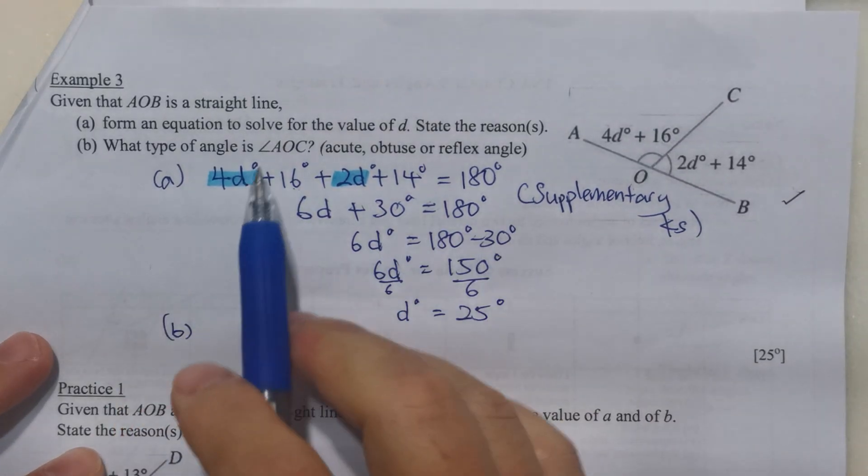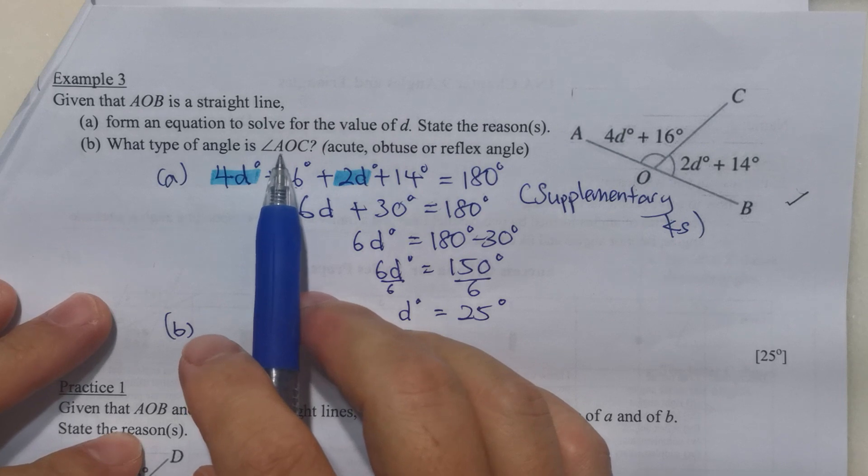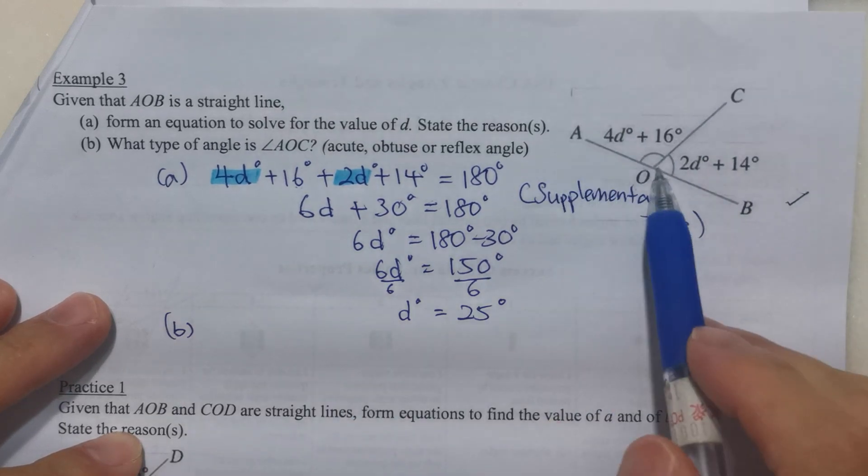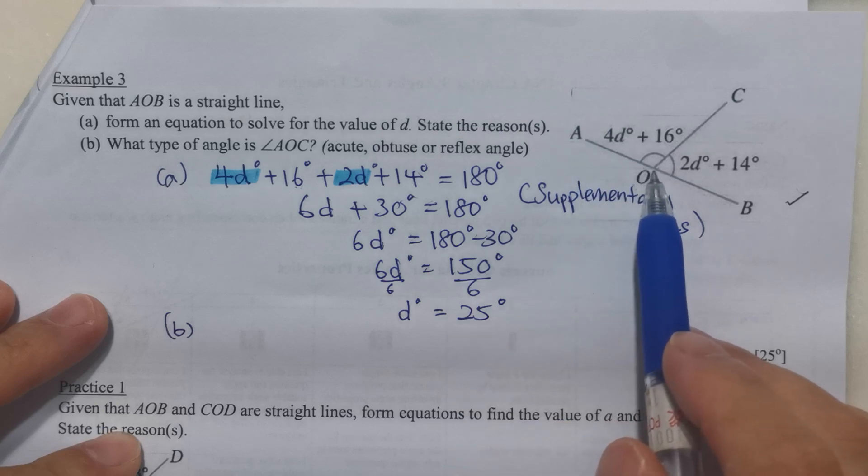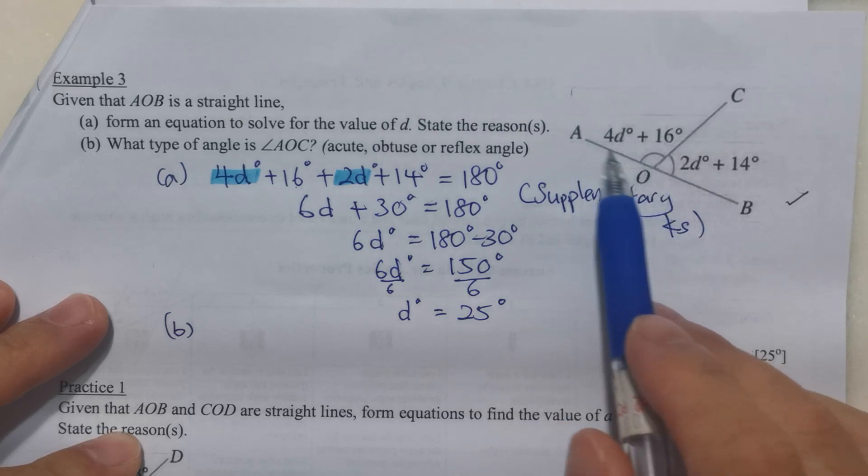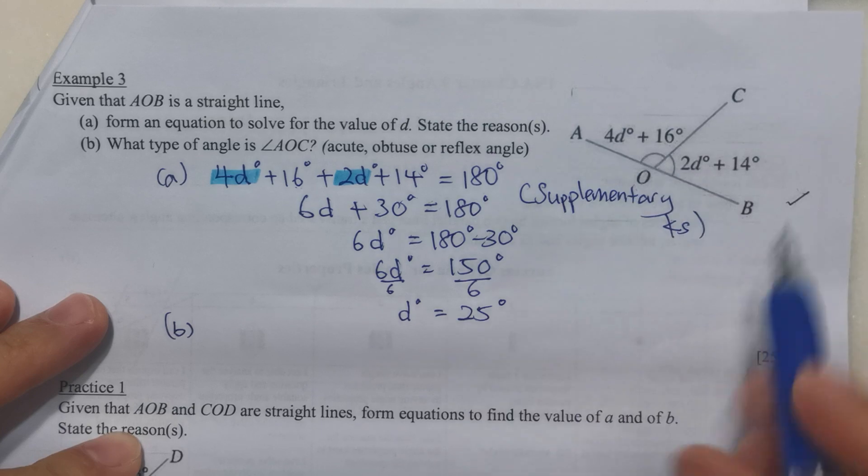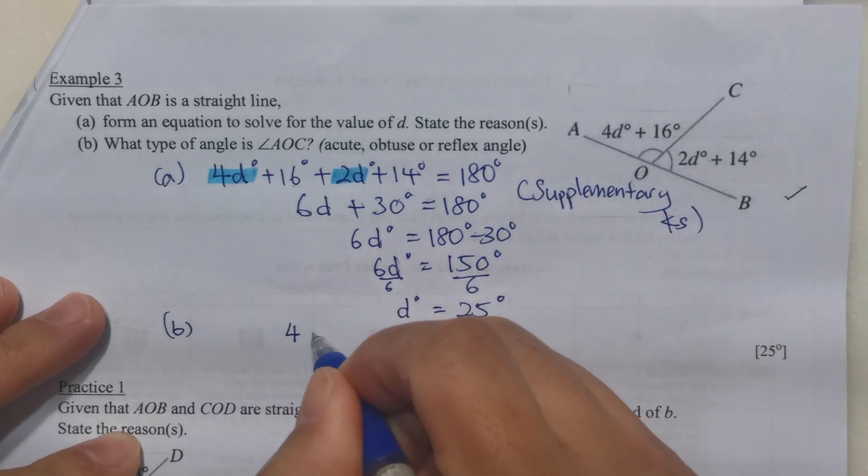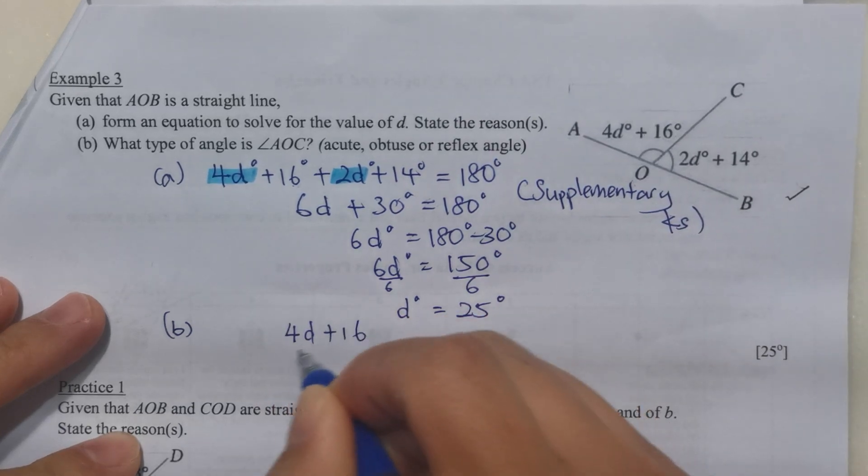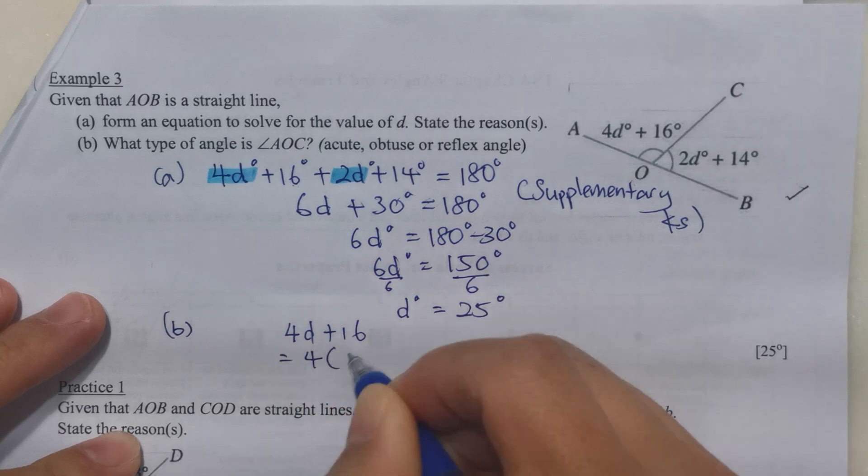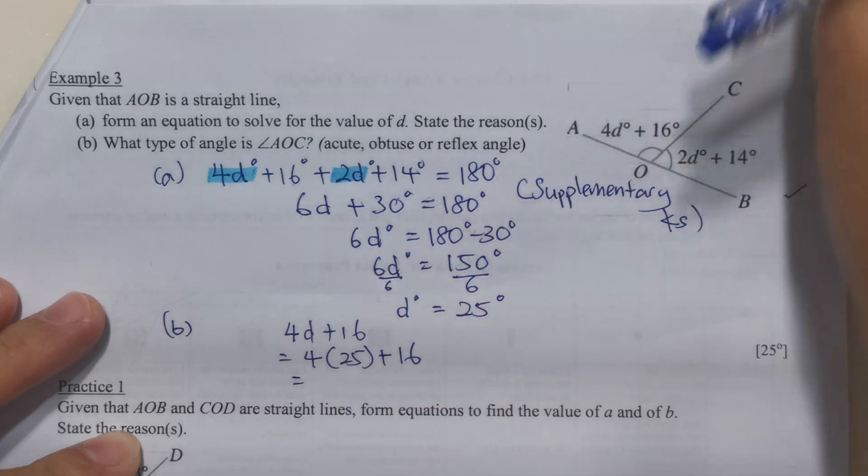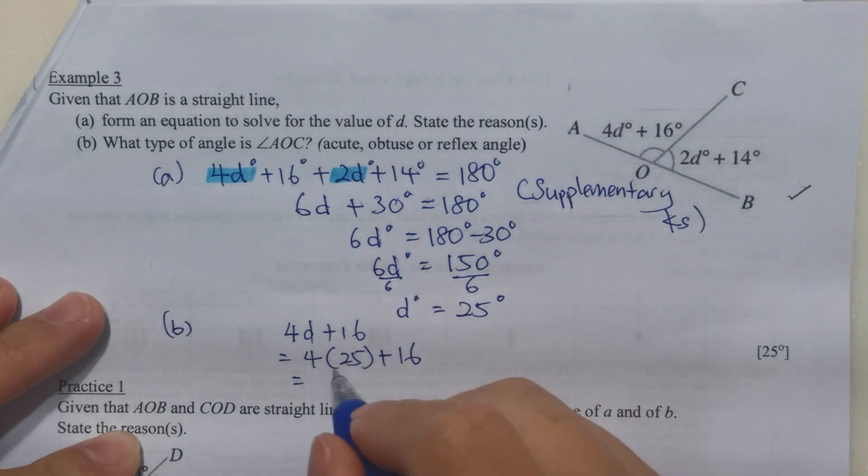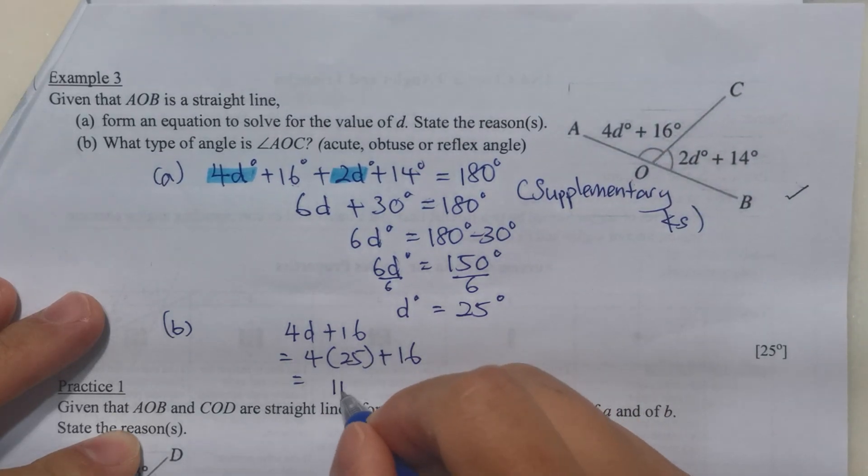For part B, what type of angle is AOC? If we can see from the diagram here, and if you want to be very sure, you can substitute: 4D plus 16 equals 4 times 25 plus 16. Using a calculator to help us, or you can do a quick mental calculation. This will give you 116 degrees.